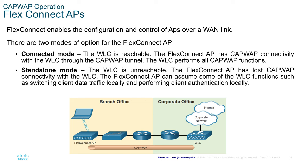FlexConnect APs. In CAPWAP operation, FlexConnect enables the configuration and control of APs over a WAN link. There are two modes: connected mode and standalone mode. In connected mode, the WLC is reachable, the FlexConnect AP has CAPWAP connectivity with the WLC through the CAPWAP tunnel, and the WLC performs all CAPWAP functions.